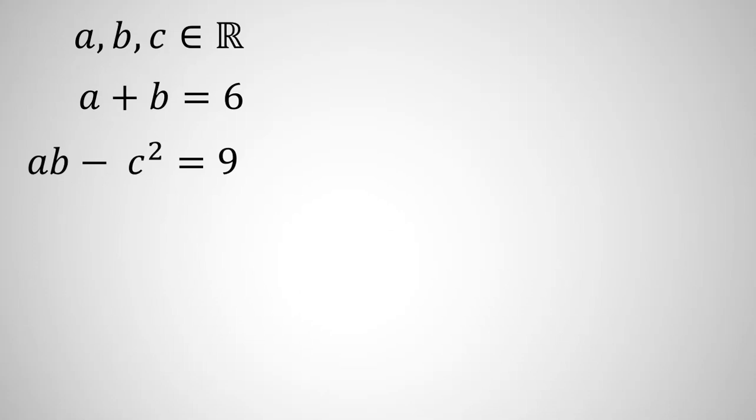So first, we try to use replacements. We can say B, if we take A to right-hand side, it's 6 minus A. And if we replace in next equation, we can see that A times B, instead of B, we write 6 minus A, minus C squared equal to 9.